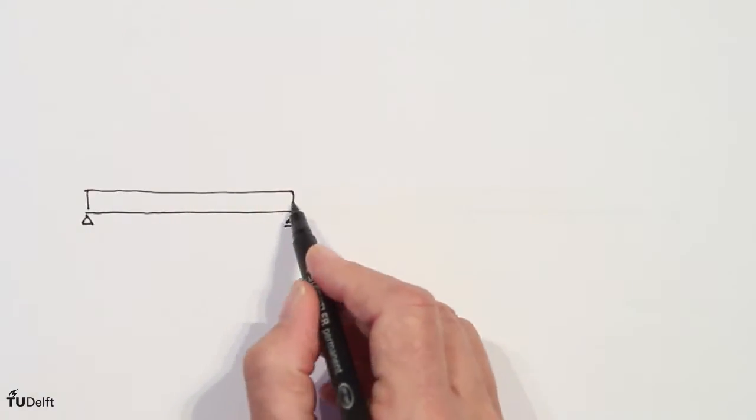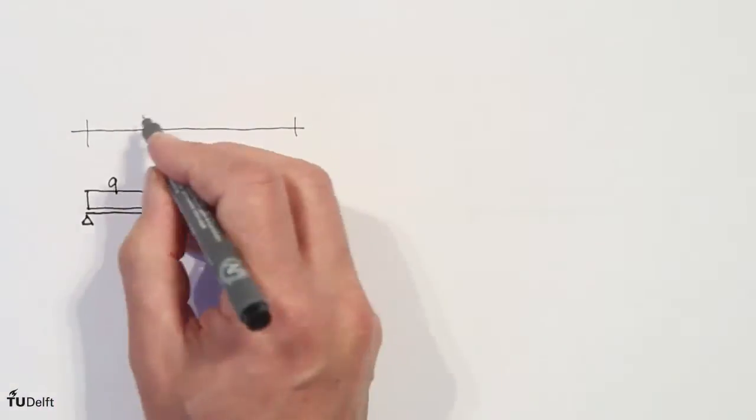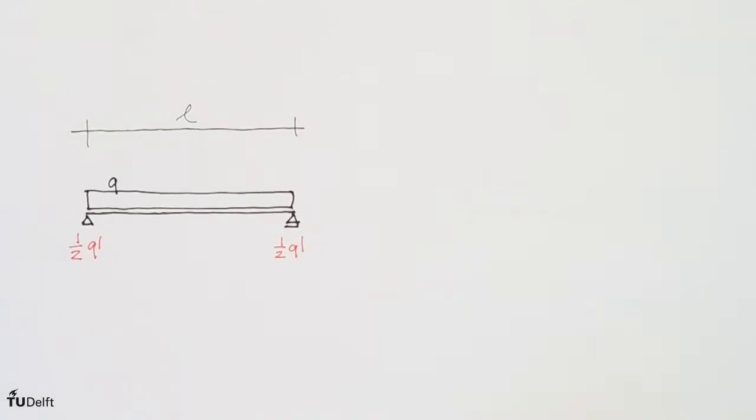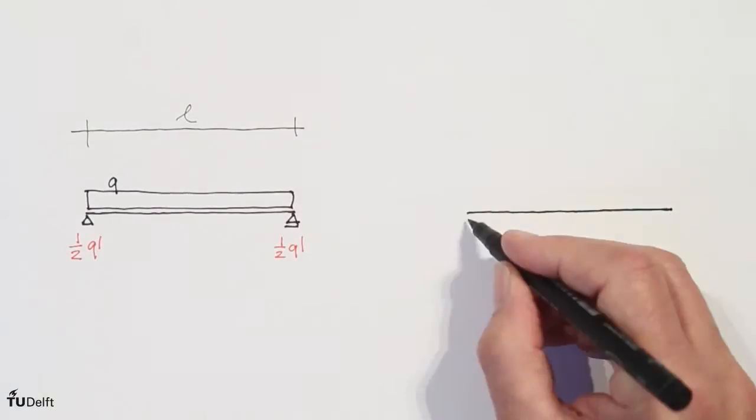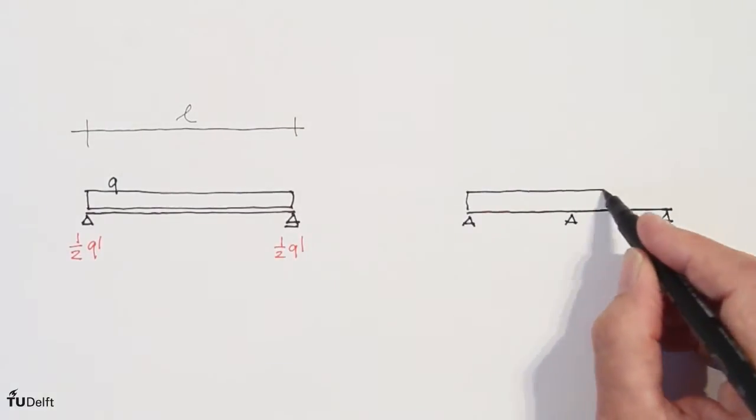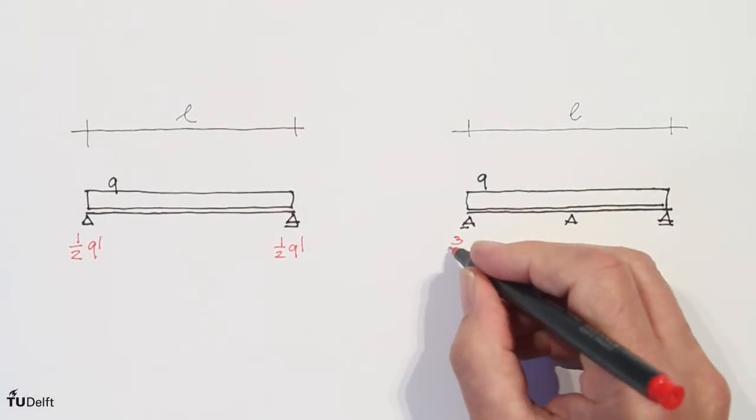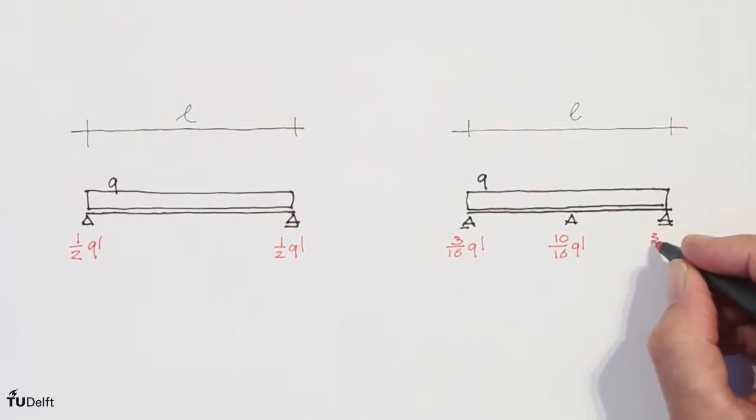The first thing is to avoid statically indeterminate structures. So to consider the element as a beam resting on just two points. In a determinate construction, each support always takes half of the load of the facade element. In a statically indeterminate construction, in principle the end support takes three sixteenths of the load of the element, the center takes ten sixteenths.